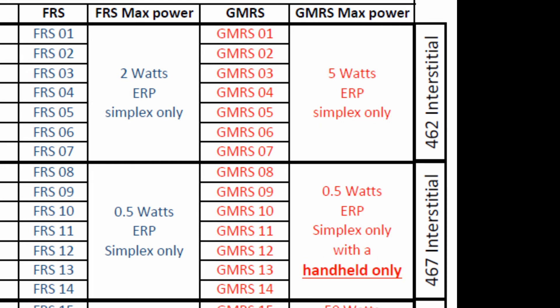Now let's compare these to GMRS. With GMRS you need a license, and so you get to use higher power — that's one of the benefits of the license. Channels 8 through 14 used to be reserved for FRS only, but because of all the combination radios the FCC allowed to be sold, if you have a handheld you can use channels 8 through 14, though they're still limited to the same power as FRS. Channels 1 through 7 can go up to 5 watts ERP out of the antenna.